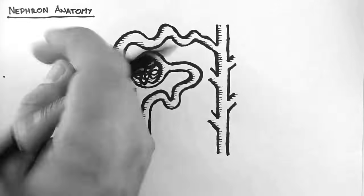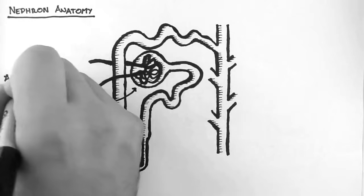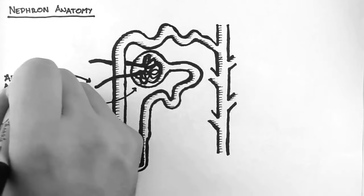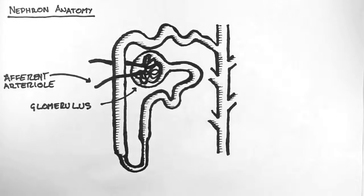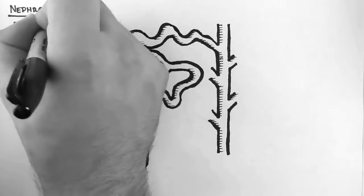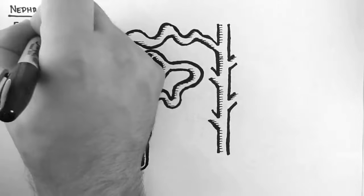And here are two very important arterioles. The afferent arteriole, which brings blood to the glomerulus for filtration, and the efferent arteriole, which takes the filtered blood away from the glomerulus.